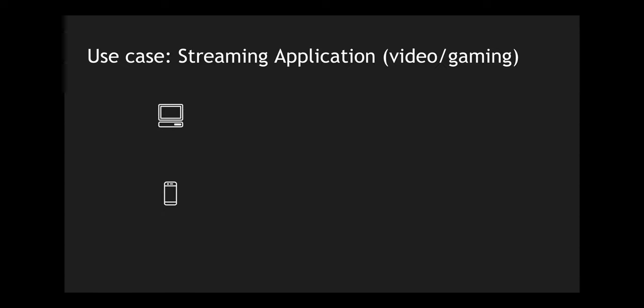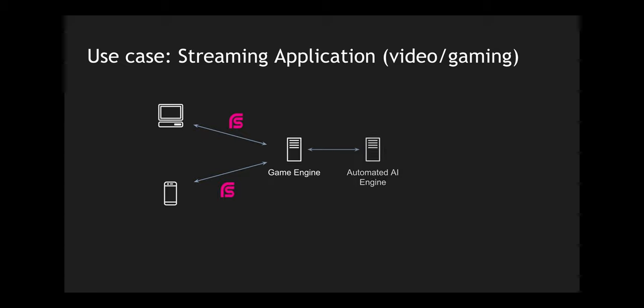Now let's look at RSocket in a gaming application example — just a disclaimer, this is an example and may not exactly overlay with a real gaming architecture. In a game, multiple clients using desktop or mobile applications all connect to something called a game engine. We leverage RSocket for interactive modes to request and get responses from the game engine. The game engine connects to different services: an automated AI engine that moves the computer in-game, and an analytics engine connected to a data store to collect game statistics.